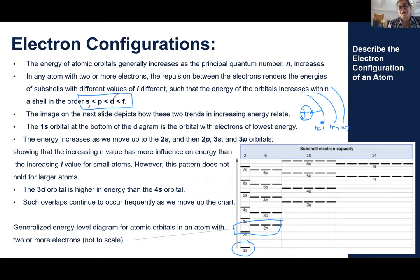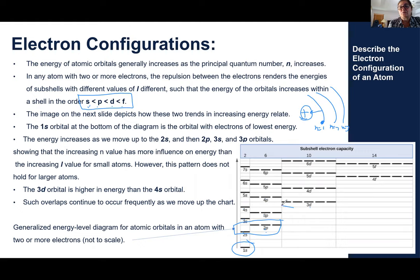Not every level has all of these sub-levels. Level one has only S. Level two has S and P. Level three has S, P, and D. Level four has S, P, D, and F. This pattern of levels — like level four having higher energy than level three — doesn't apply all the time for larger atoms. We see some exceptions. Sub-level 3D has lower energy than 4P, so when writing electron configuration, we give electrons to 3D before 4P.